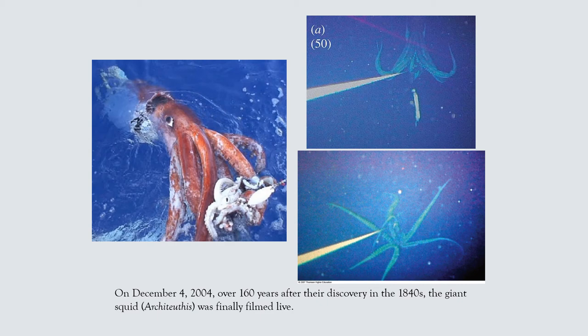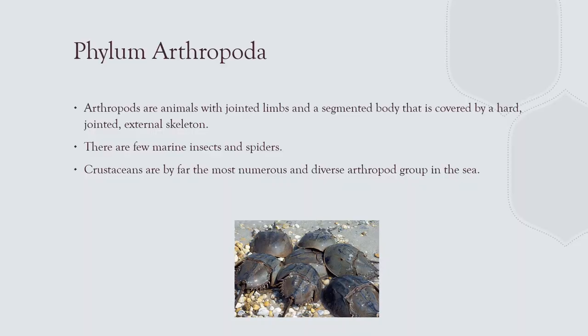The largest marine invertebrate is the giant squid — very elusive. Architeuthis, the Kraken. The first photographs of a living giant squid were taken in 2004; these creatures have lived in legend for centuries. Arthropods have jointed appendages — two main groups: the Limulus (horseshoe crab, which is not a true crab but a different group) and the crustaceans.